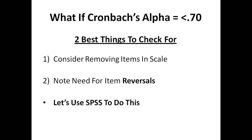What if the Cronbach's alpha rating is below 0.7? There are two general things you should look at right away. First, consider removing items from your scale — some items might not be correlated with the others, and you want to take those out. Second, look at whether there is a need to reverse some items, because for a good Cronbach's alpha, all the items have to be going in the right direction — a higher score on all items has to indicate a greater presence of the construct. We're going to go on SPSS and show how we would remove or reverse items if needed.